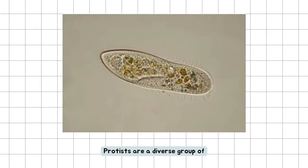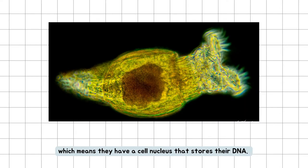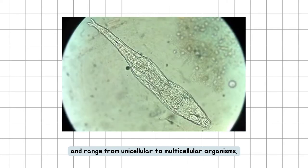Protists are a diverse group of predominantly unicellular eukaryotes, which means they have a cell nucleus that stores their DNA. Protists reproduce asexually via mitosis and range from unicellular to multicellular organisms.